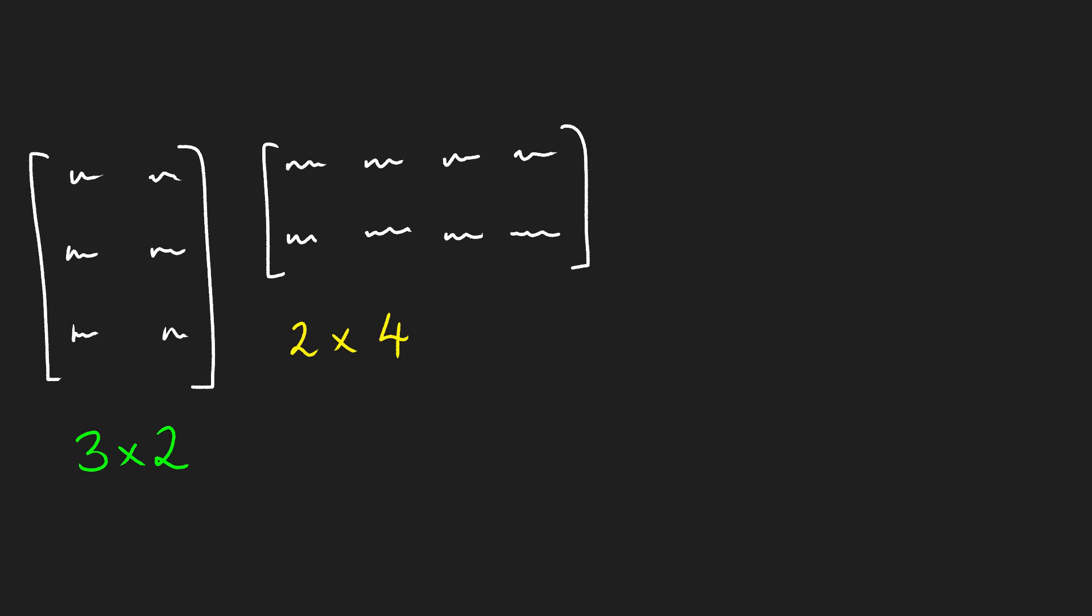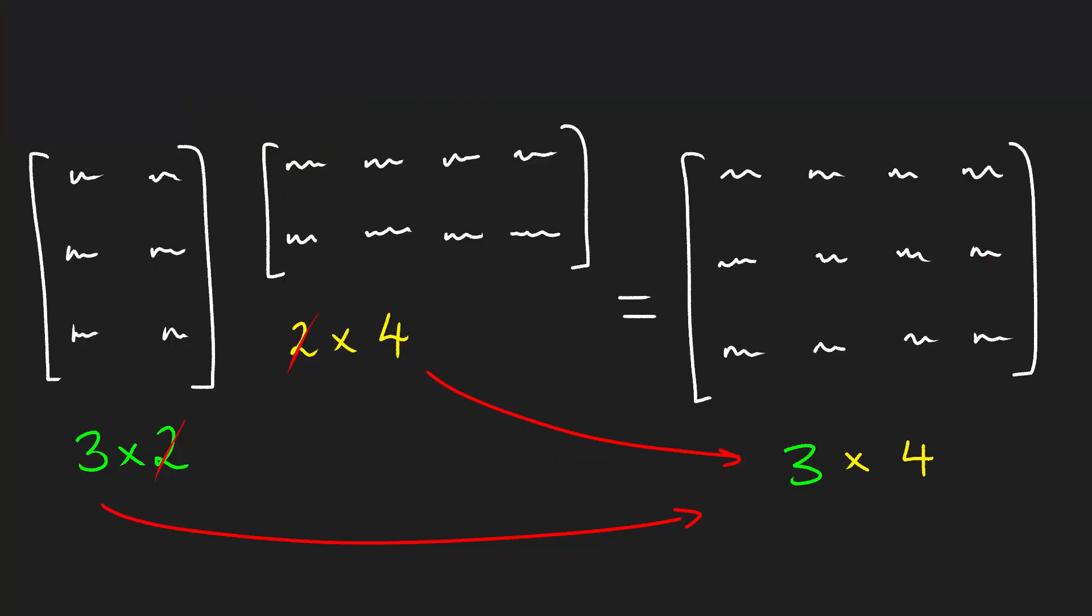But an interesting result is that by understanding how we're doing matrix multiplication, we can find out the dimensions of our expected result matrix before we've even started doing any matrix multiplication. Because if say I had a three by two matrix, and I wanted to multiply it by a two by four matrix, then what I'll be left with, because the columns of the left hand matrix match up with the columns of the right hand matrix, the matrix multiplication is possible. And so what I'll be left with is a three by four matrix as a result.